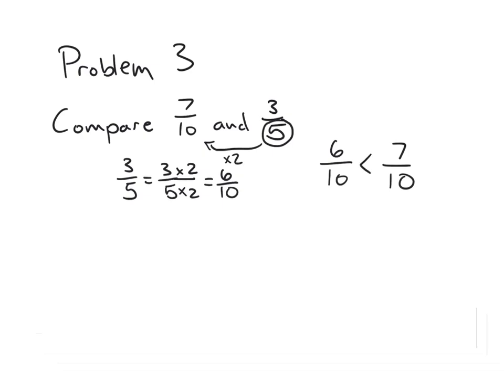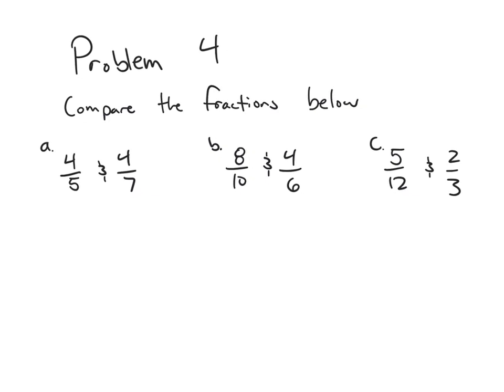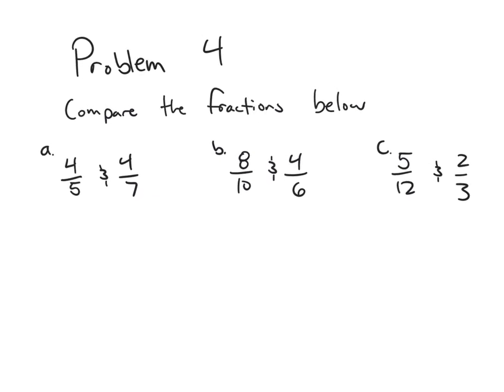That covers the two main strategies for comparing fractions without common units or common number of units: find an equivalent fraction with a matching numerator or denominator. In Problem 4A, comparing four-fifths and four-sevenths, we have the same numerator, so we look at the denominators. Fifths are larger than sevenths, so four-fifths is greater than four-sevenths. That one was pretty straightforward.